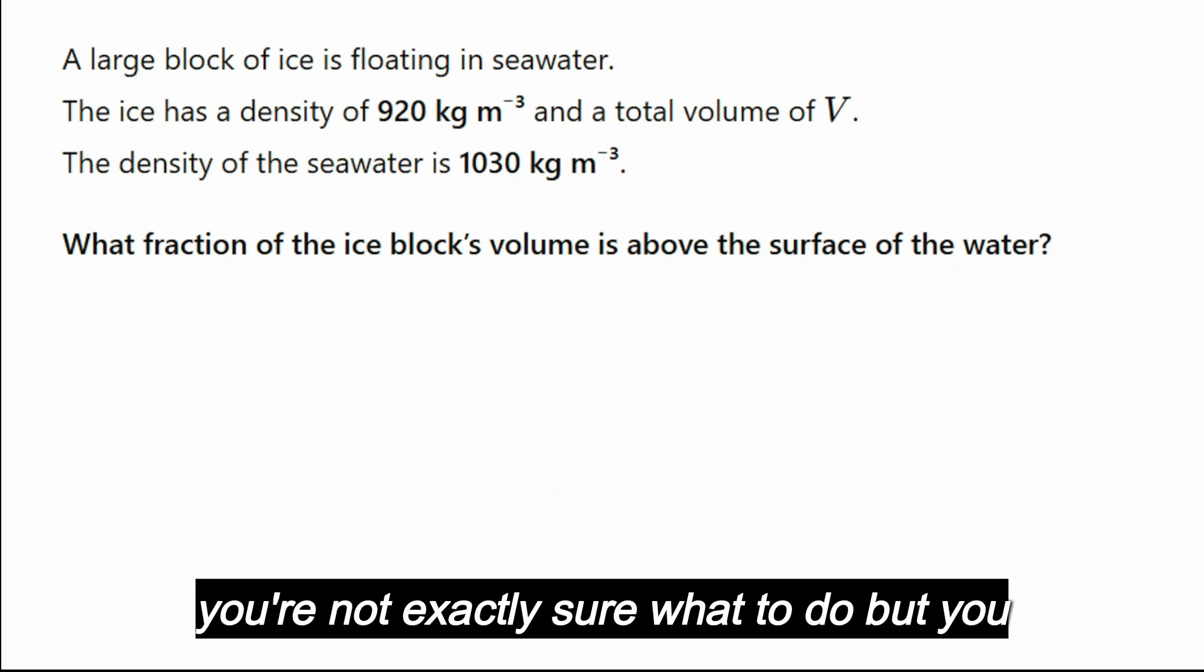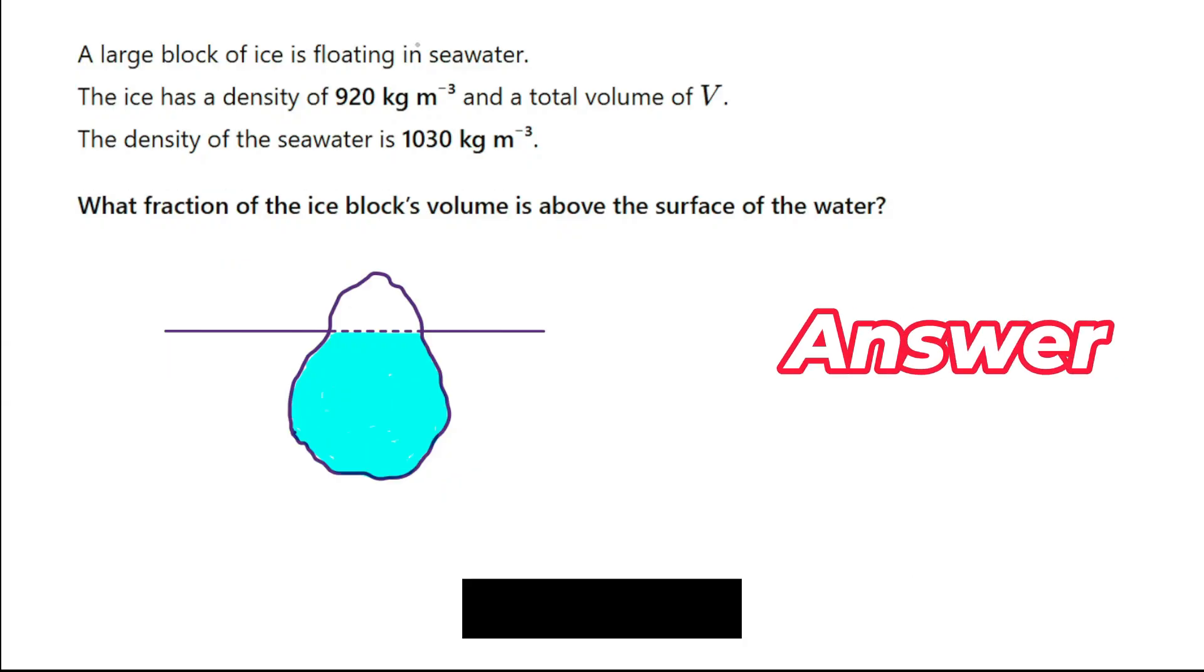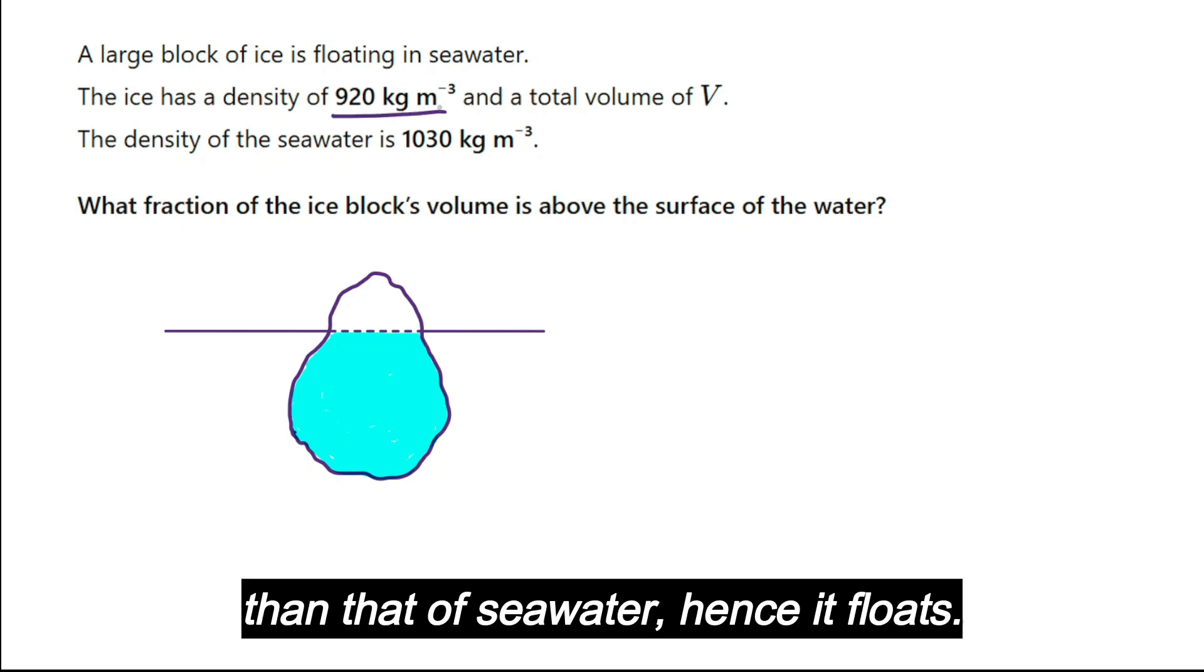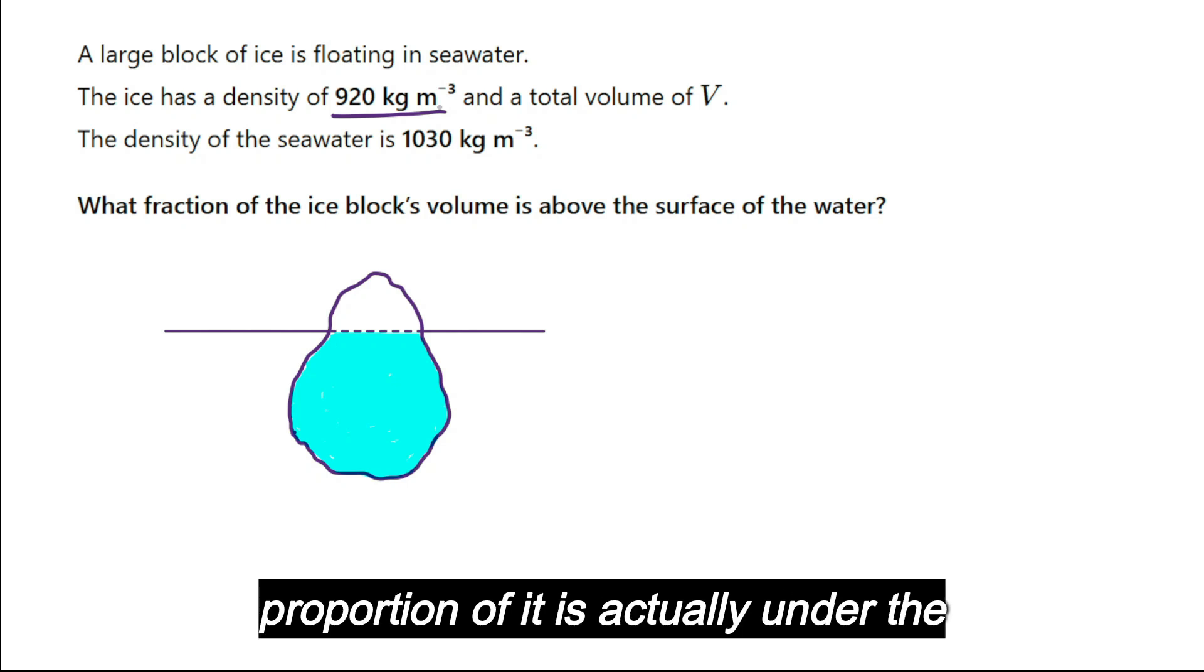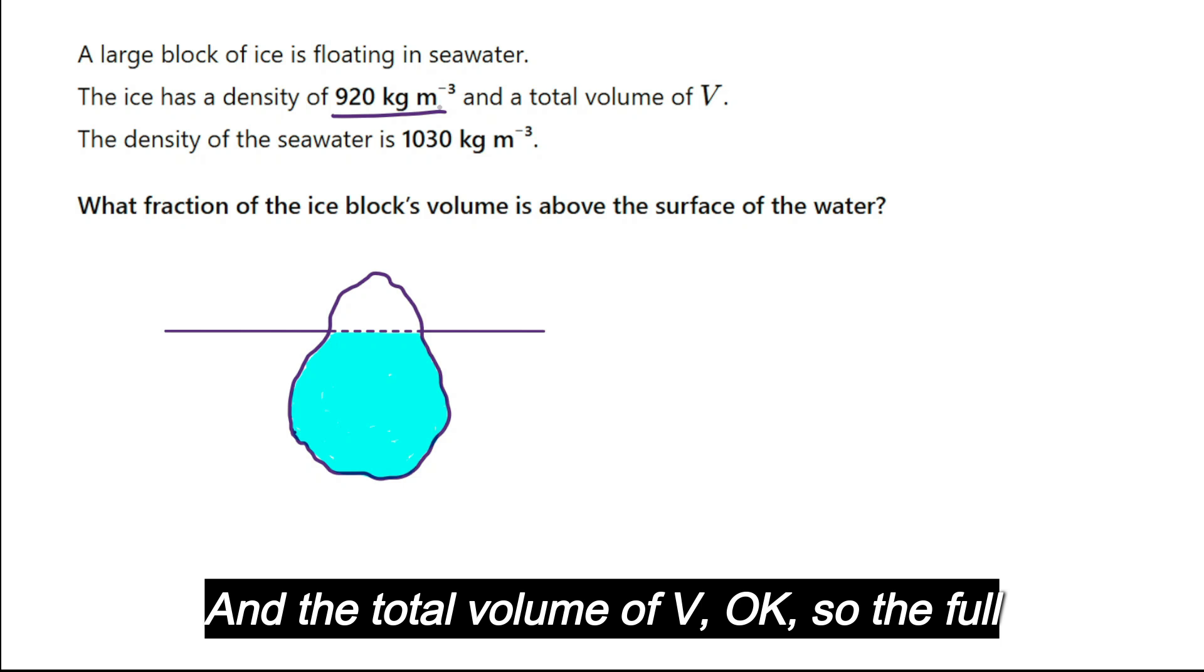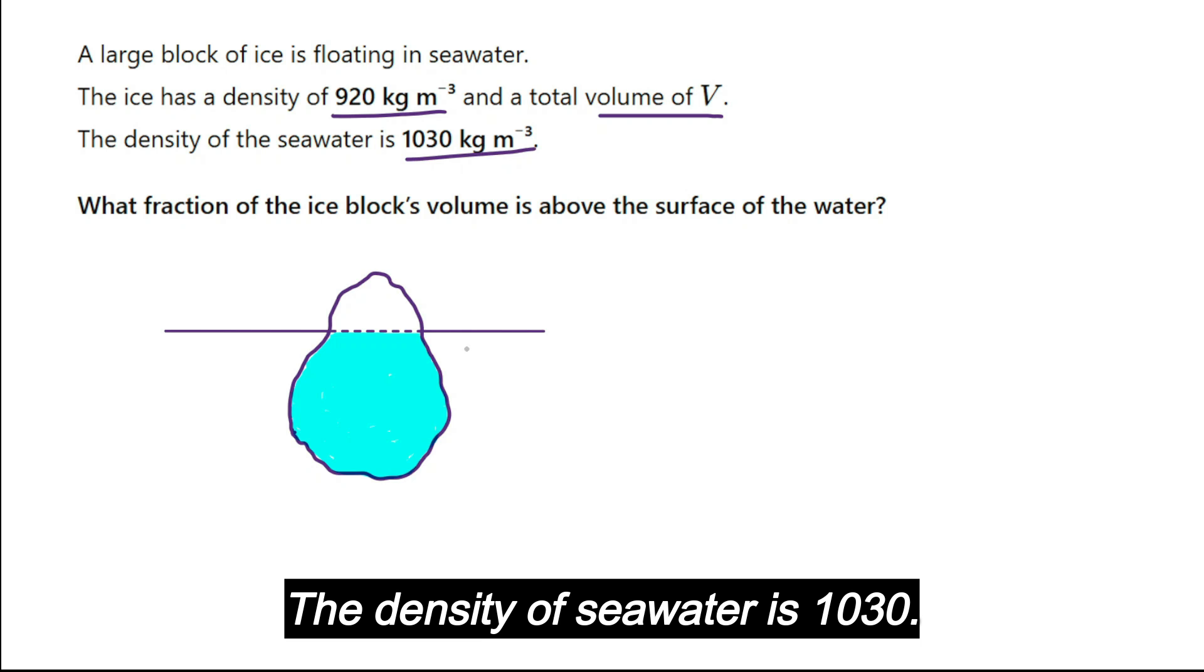A large block of ice is floating in seawater. The ice has a density of 920 kg/m³, which is less than that of seawater, hence it floats. But a large volume of it, a large proportion of it, is actually under the seawater. The total volume is V. The density of seawater is 1030 kg/m³.